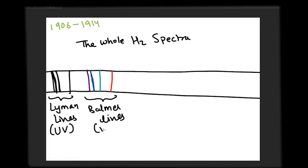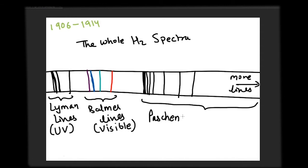and beyond in the infrared region called Paschen lines, Bracket lines, and Pfund lines.